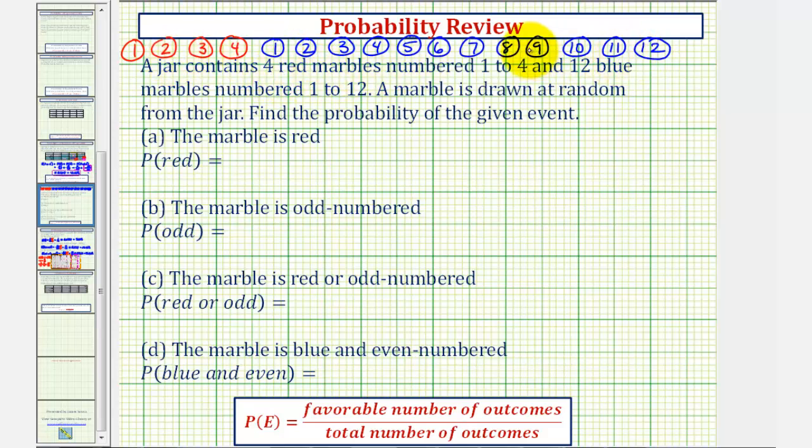And since the probability of an event is equal to the favorable number of outcomes divided by the total number of outcomes, since we're selecting just one marble, the total number of outcomes for each probability will be 16.